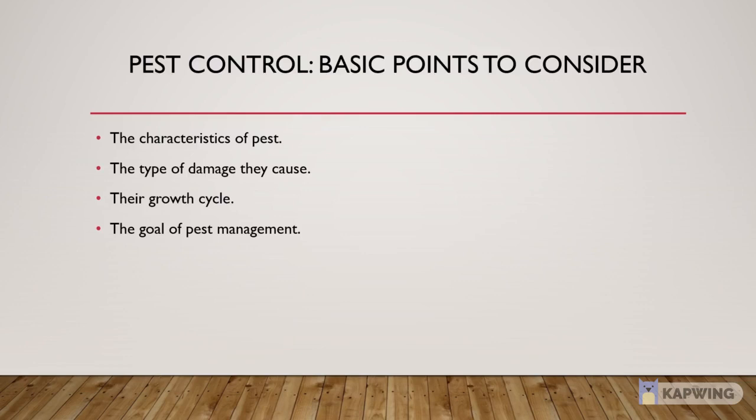When we go for pest control, there are some basic points which need to be considered. Number 1: The type of pest. Number 2: The type of damage they are causing. Number 3: Their growth cycle. And number 4: The goal of pest management.